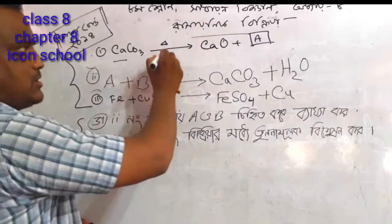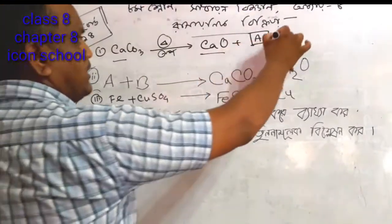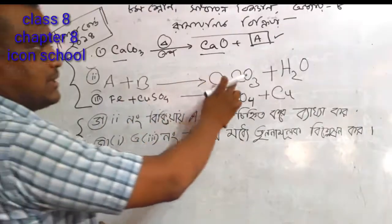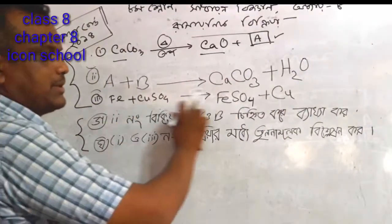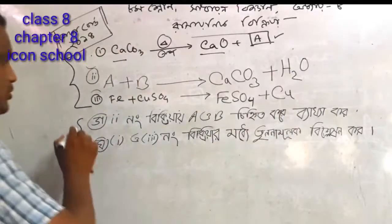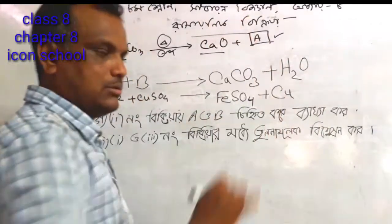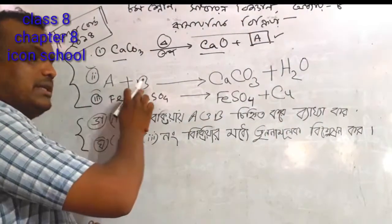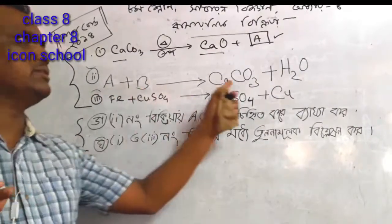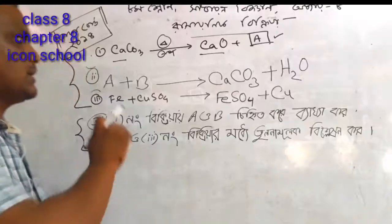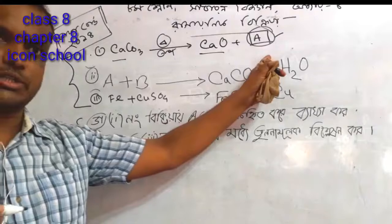Calcium carbonate is the same. Calcium oxide is the same. The problem is called calcium carbonate. I asked the problem here. One question was the problem of A and B. The problem here is that A and B are the same. What a problem is 1, 2, 1.